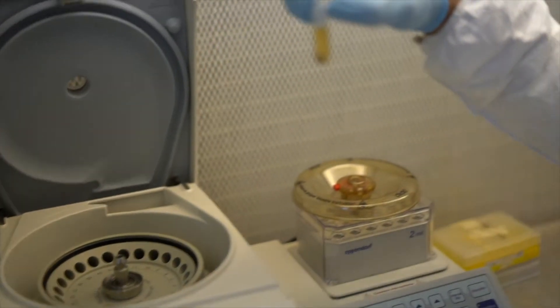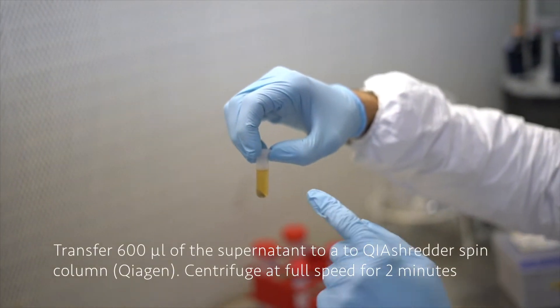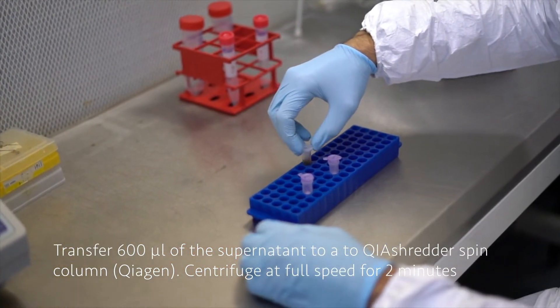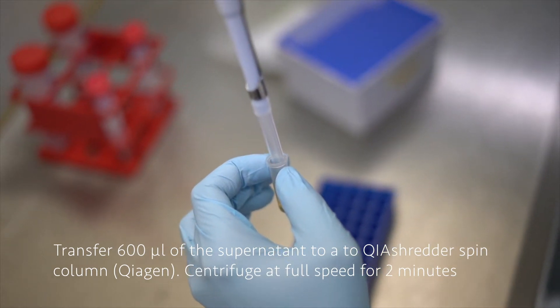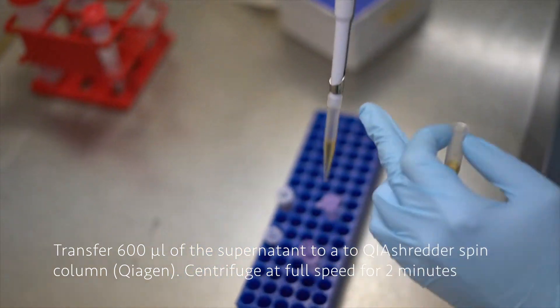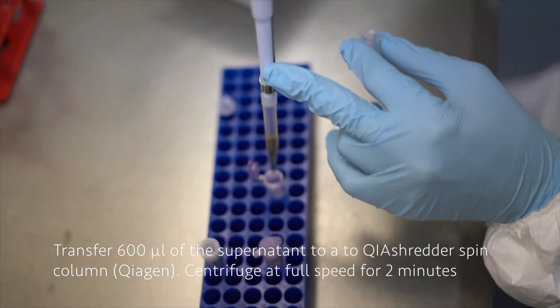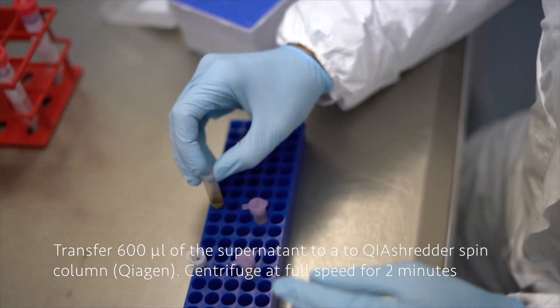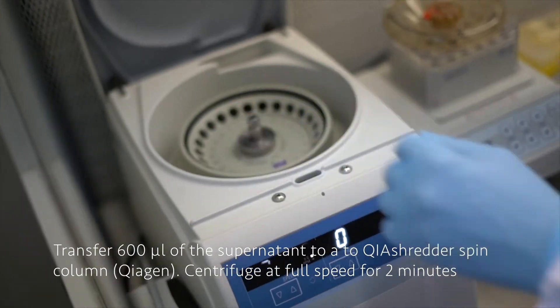Now the centrifugation is ready, we see there is like a sediment and a supernatant. We have then to pass the supernatant through a shredder column of the Qiagen kit, and this has to be done in two steps each with 600 microliters. Now we have to centrifuge it at full speed for two minutes.